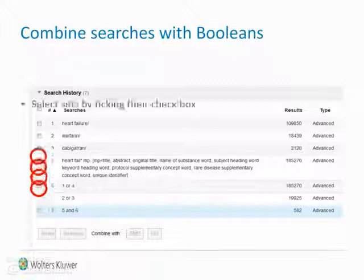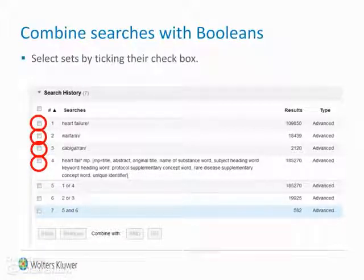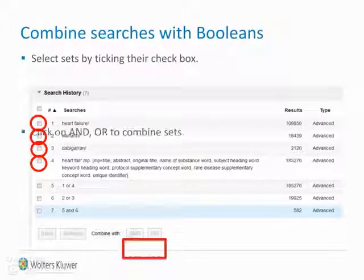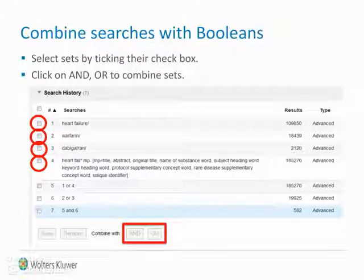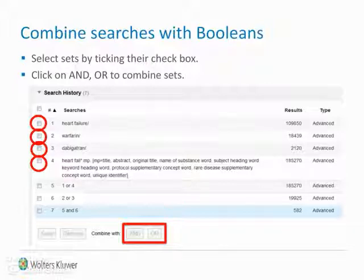To combine advanced searches, users must first check the individual boxes, then combine the sets with Boolean operators AND or OR. Notice their position in the Ovid interface.